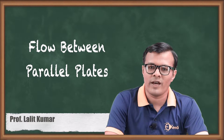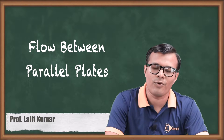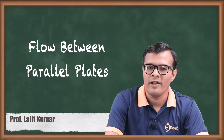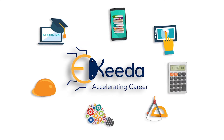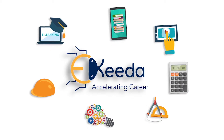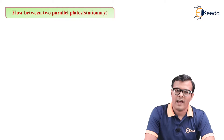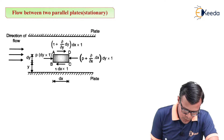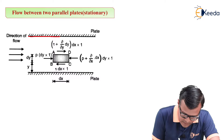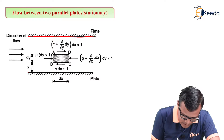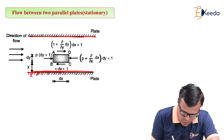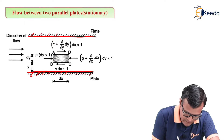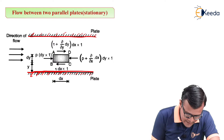Hello friends, in this video we are going to study the nature of flow when it flows between two stationary plates. Let's start with the actual derivation. Suppose there are two plates — this is the first plate, this is the second plate. These plates are stationary, as shown symbolically in the diagram, and there exists a flow of a fluid in the direction as shown in the figure.